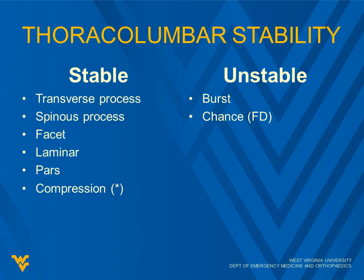For thoracolumbar stable fractures we have transverse process, spinous process, facet, laminar, pars, and compression fractures — with an asterisk on compression because some are considered unstable or very dangerous. On the unstable side: burst fractures and chance fractures, which are flexion distraction injuries. The chance fracture is historically important and has been greatly reduced with the advent of the shoulder belt in cars.